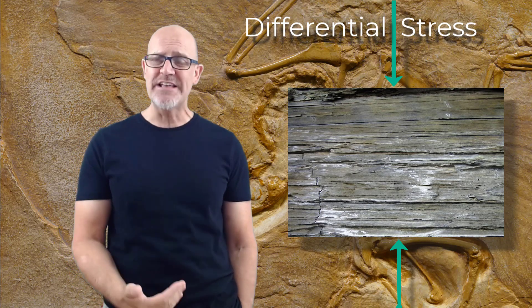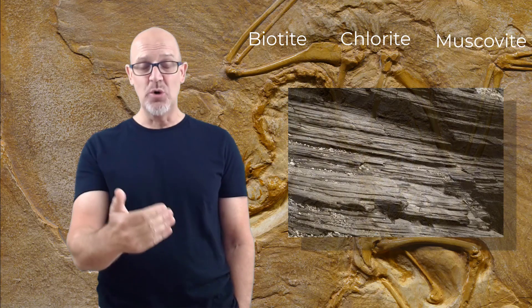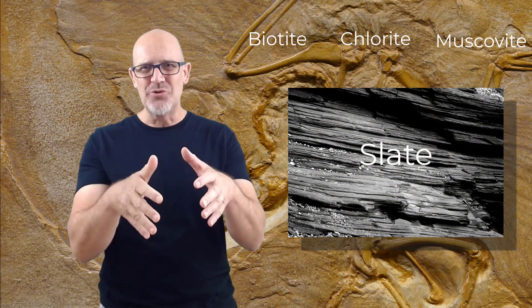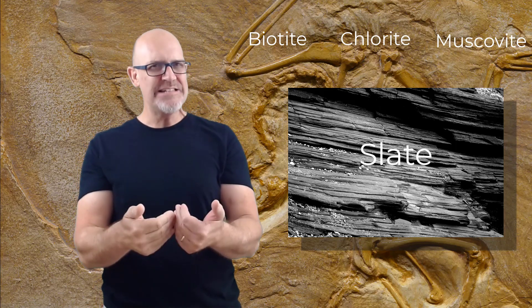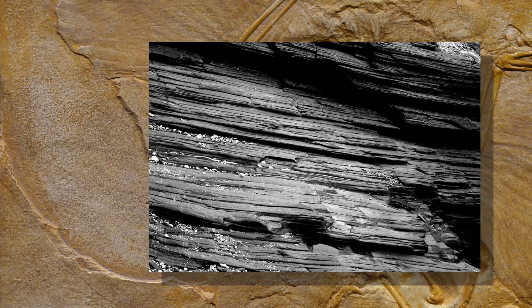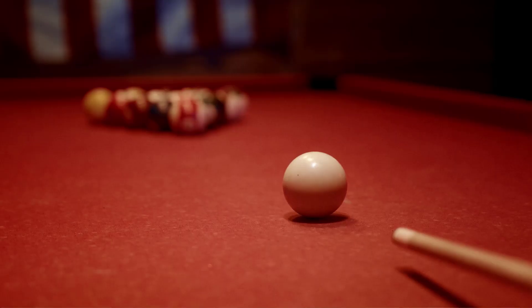As an example, sedimentary shales, which contain abundant particles of clay, will turn into a metamorphic rock called slate. This happens when the shale is compressed from two opposite directions — we call this differential stress. This compression causes the microscopic clay minerals to recrystallize into the minerals biotite, chlorite, and/or muscovite. These minerals are really flat and platey with a shiny luster, which is why slates can be split along very flat planes and are used for roof tiles and billiard tables.